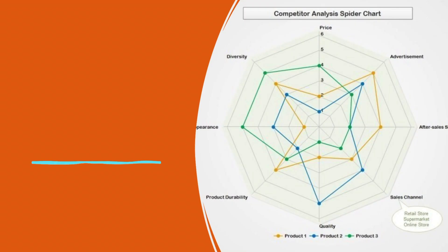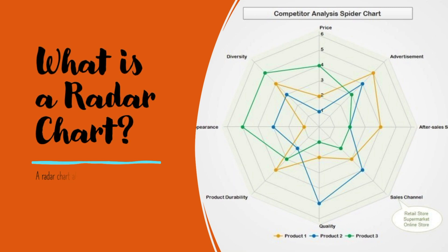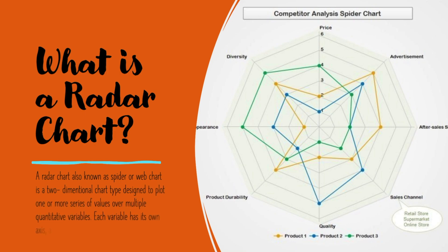Let's start by understanding what is a radar chart. Radar chart, also known as spider or web chart, is a two-dimensional chart type which is designed to plot one or more series of values over multiple quantitative variables. Each of these variables has its own axis and all these axes are joined in the center of the figure like the spokes of a wheel, and it can be really interesting to show how different patterns in your data can stand out.